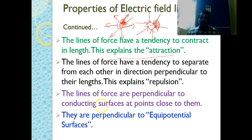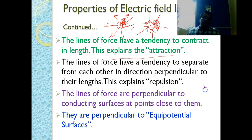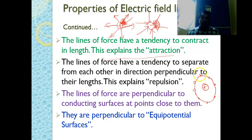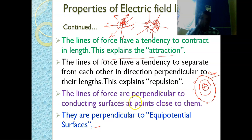Seventh: the lines of force are perpendicular to conducting surfaces at points close to them, and they are also perpendicular to the equipotential surfaces. Equipotential surfaces are surfaces surrounding a charge at every point of which the potential is the same — for example, concentric circles around a point charge form equipotential surfaces.